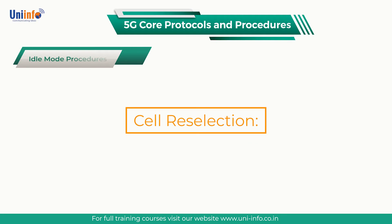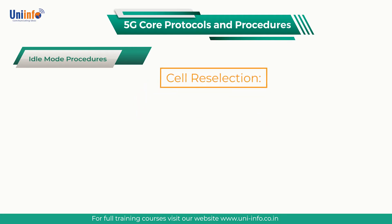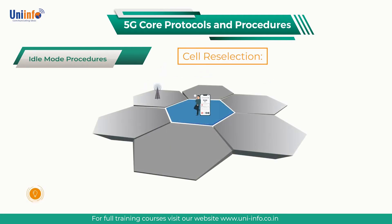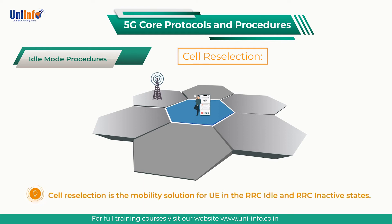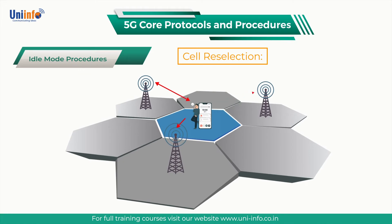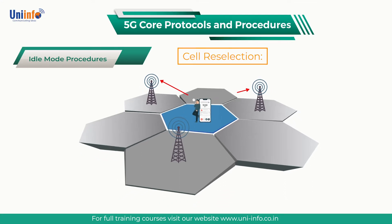Cell reselection is the mobility solution for UE in the RRC idle and RRC inactive states. In the case of RRC idle, a UE can complete cell reselections without informing the network as long as the UE remains within a registered tracking area.